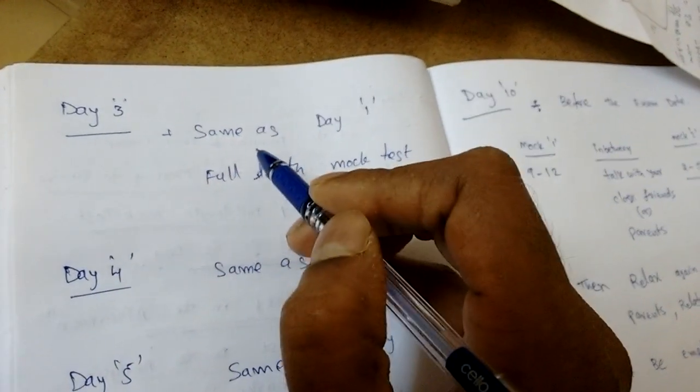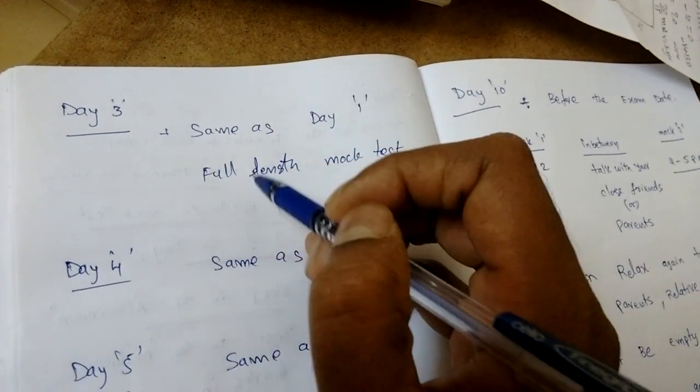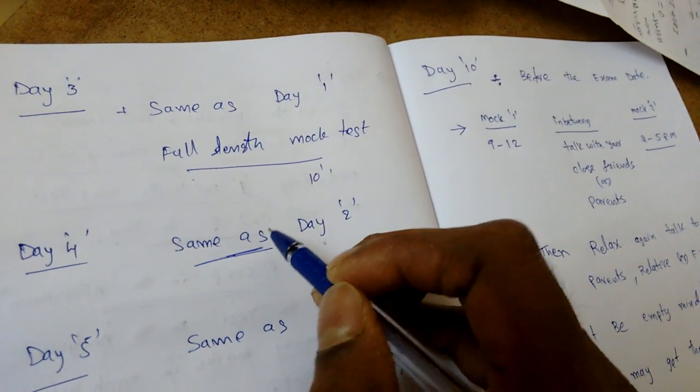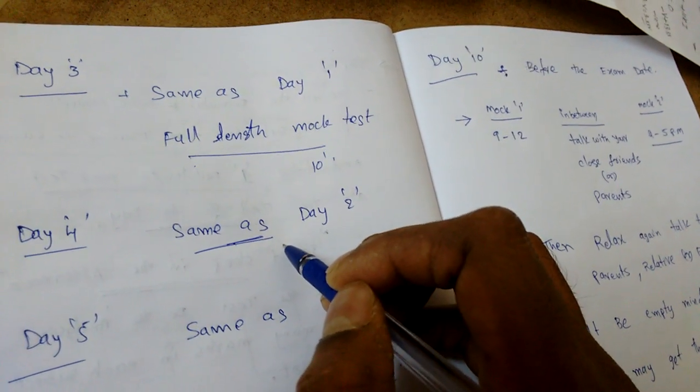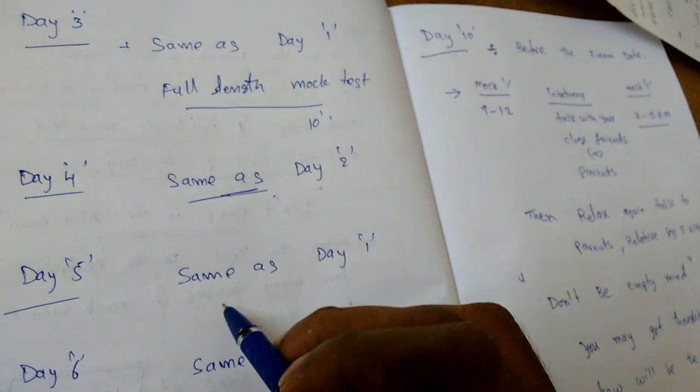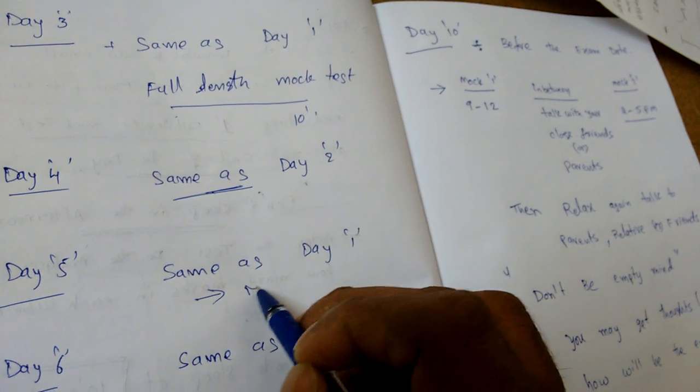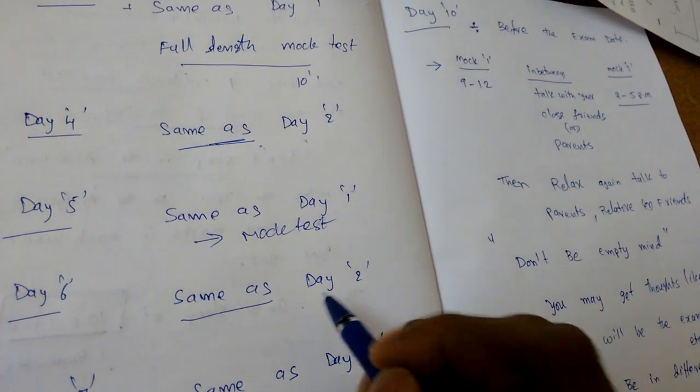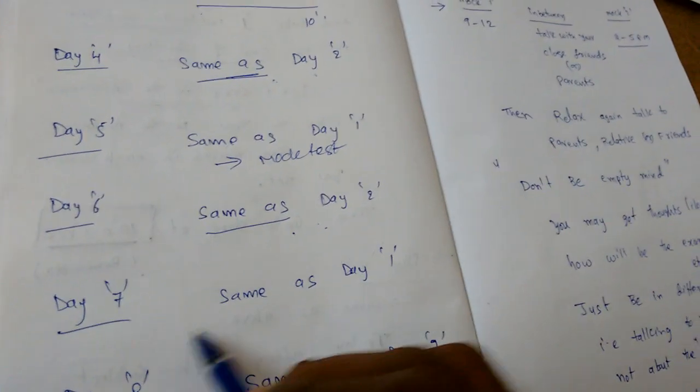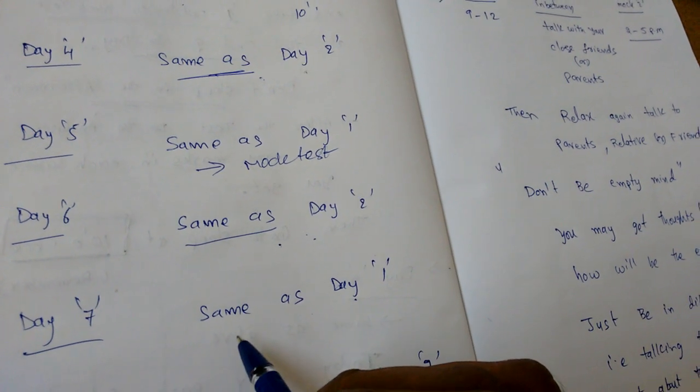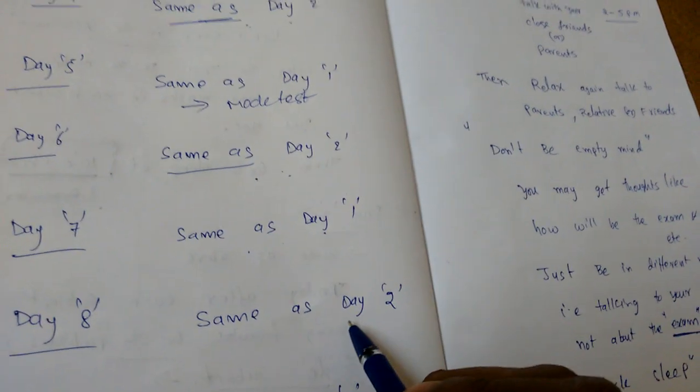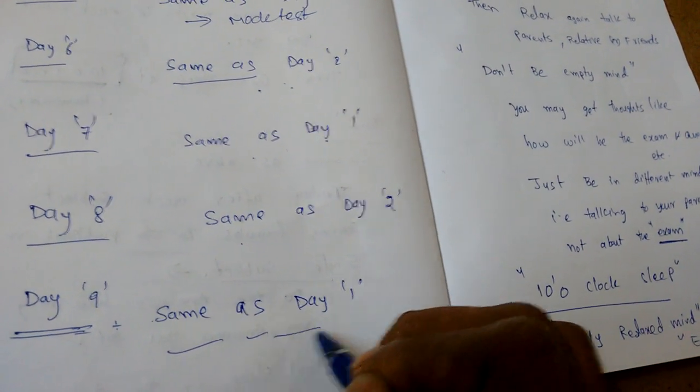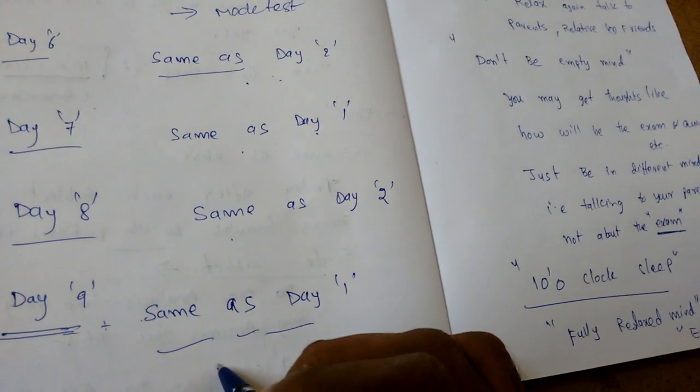Then do the analysis. If you're having a mock test on each subject, then do that subject test. Again, do the analysis - how many wrong answers, where you went wrong, etc. Similarly, don't sleep in the afternoon, only sleep at 10 o'clock at night. The odd days - Day 3, Day 5, Day 7, Day 9 - we will do same as Day 1: all the formulas, all the basic concepts revision, then full length mock test, don't sleep in the afternoon, sleep at only 10 o'clock. Even days - Day 4, Day 6, Day 8 - same as Day 2: each subject wise, we will do revision or formulas, then do some numericals after each subject.